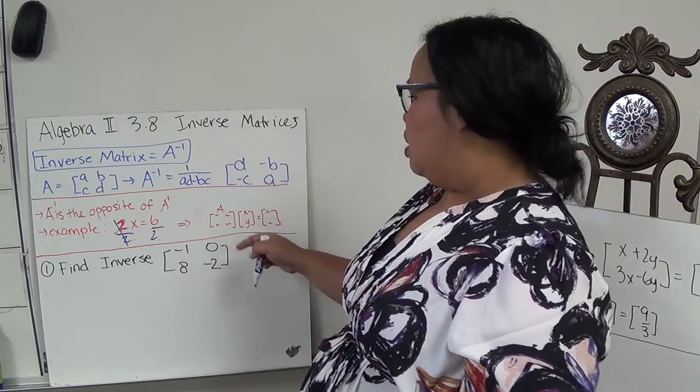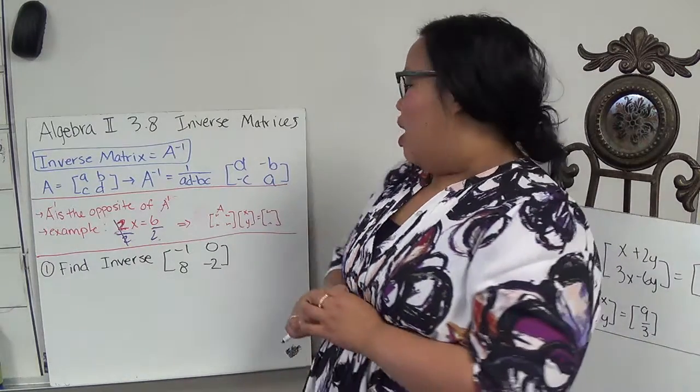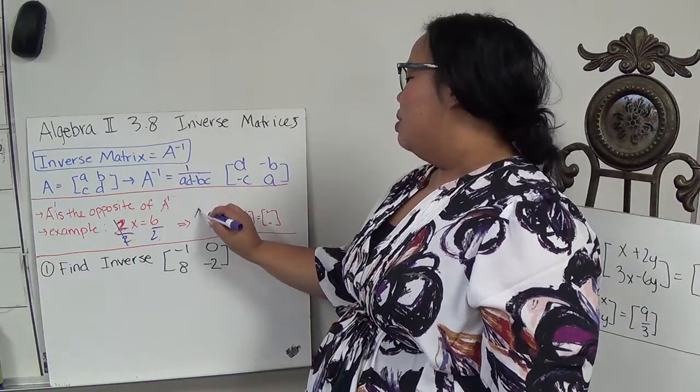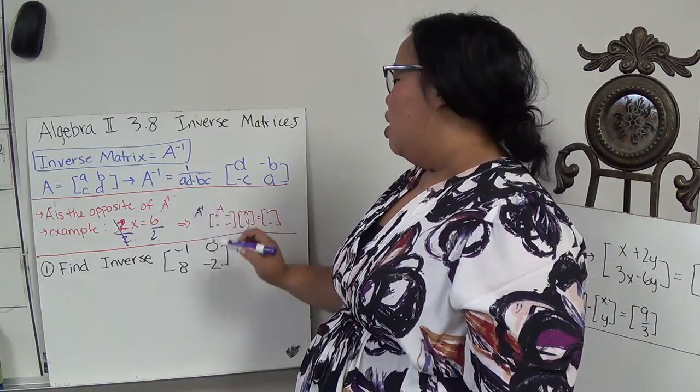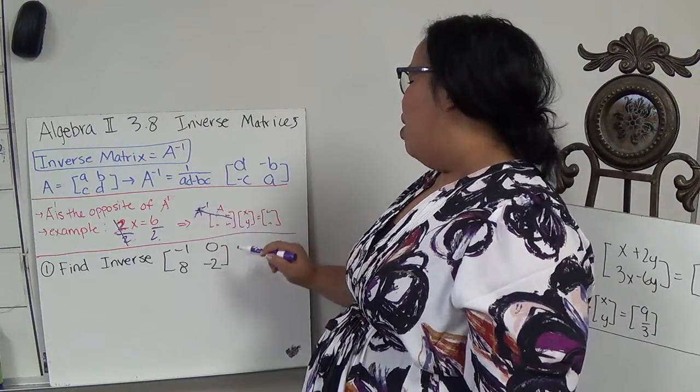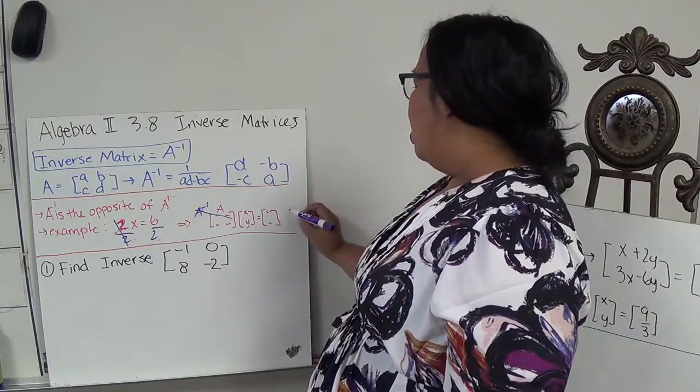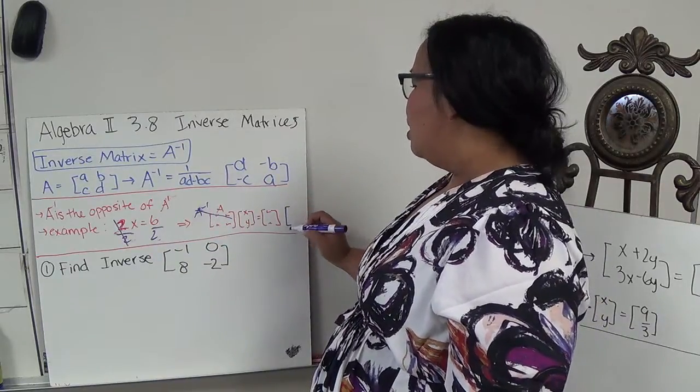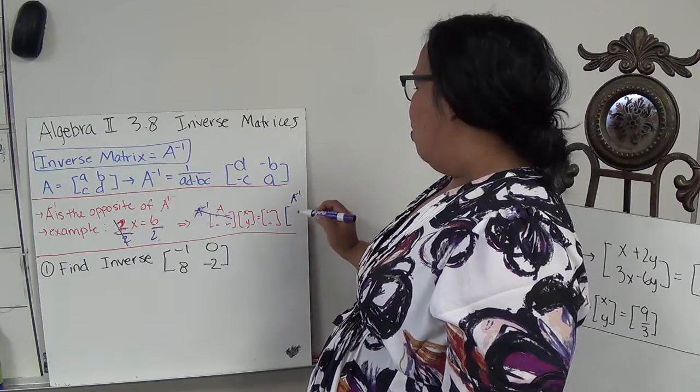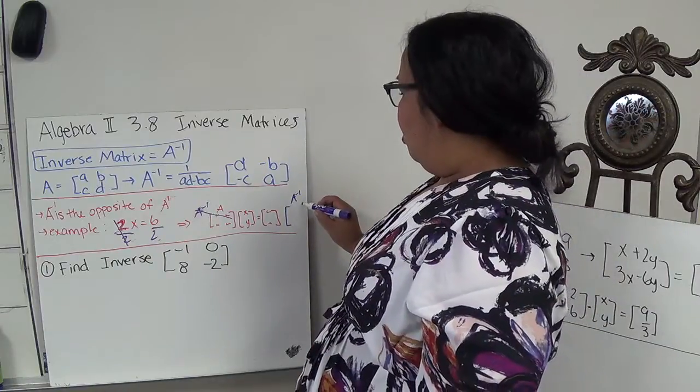Well, in an inverse matrix, I can multiply A times A to the negative 1, and then these cancel out and I end up with just x and y. But what I do on one side, I have to do to the other. So then I have to multiply this by A to the negative 1.